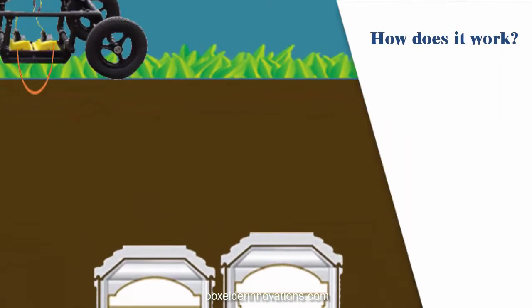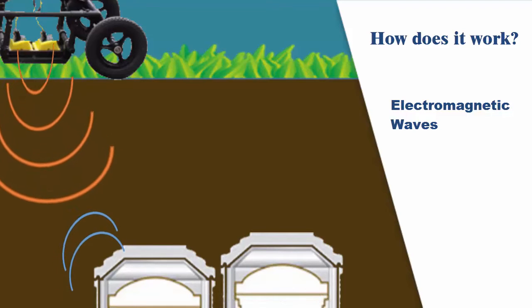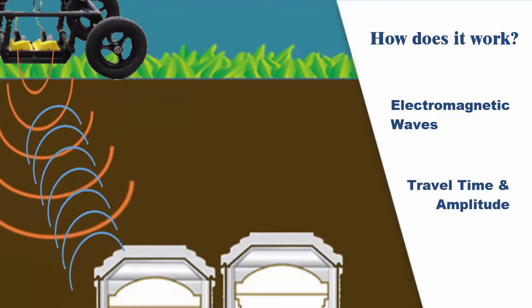How does it work? The GPR antennas send and receive electromagnetic waves. When the signal returns to the antenna, travel time and amplitude of the signal are recorded.